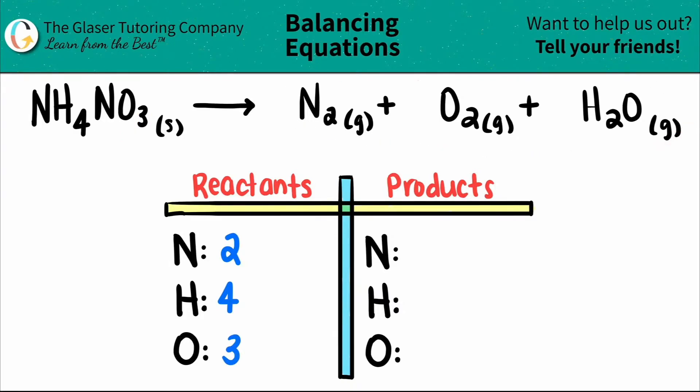Going to the product side, I see that I have nitrogen and I have two of them. So I'm going to put a two here. For the oxygens, there's oxygens on both of these, so you have to add them together. I have two oxygens plus one oxygen, so two plus one is a total of three oxygens.